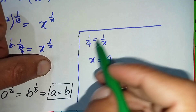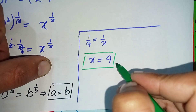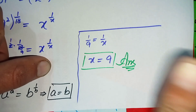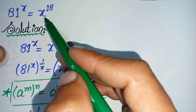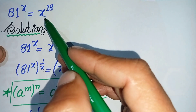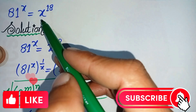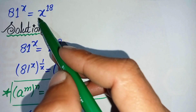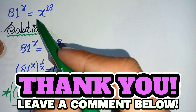So x equals 9 is the answer and one of the possible solutions of this interesting exponential math problem. Don't forget to subscribe to our YouTube channel for more interesting math videos. Thank you so much for watching — take care, see you in the next video, bye bye.